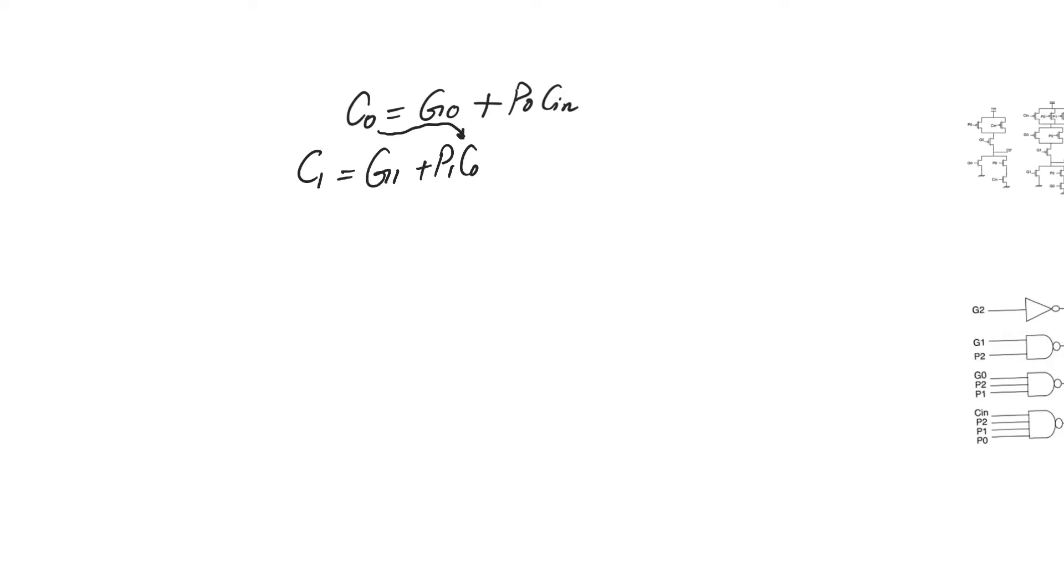C1 has to wait T carry before it starts to calculate. On the other hand, we already have the expression of C0, so we can substitute for the expression of C0 in the expression of C1 to get G1 plus G0 P1 plus P1 P0 Cin. If we look at this expanded expression of C1, it does not contain anything that is not ready at time equals zero. Every single element here is ready at time equals zero.